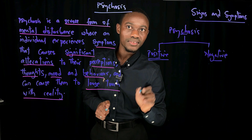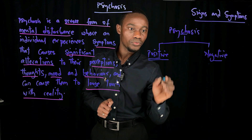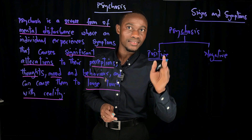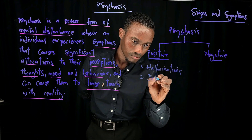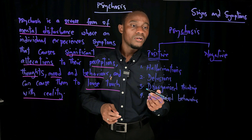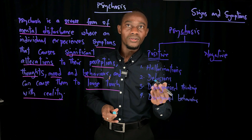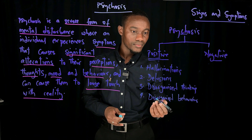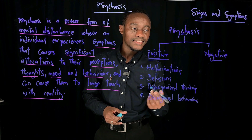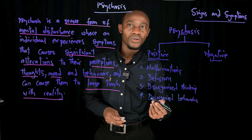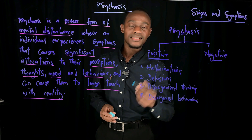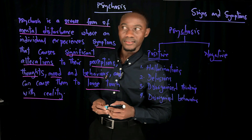Under the positive signs of psychosis, we have four different sections: hallucinations, delusions, disorganized thinking, and disorganized behavior. Let's start with hallucinations.